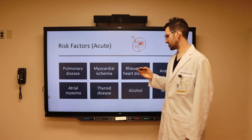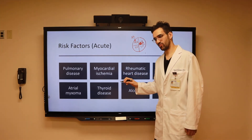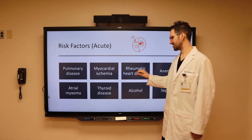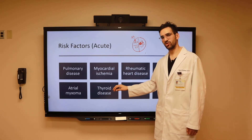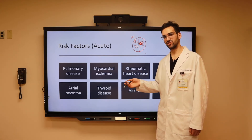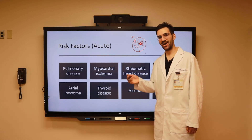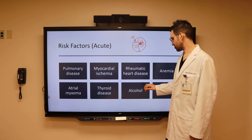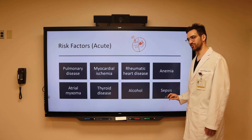Additionally, thyroid disease is closely related to anemia in terms of both conditions setting off atrial fibrillation, as both can ultimately lead to increased stress on the heart and a high output state over time. Furthermore, consumption of alcohol as well as sepsis can both set off atrial fibrillation.